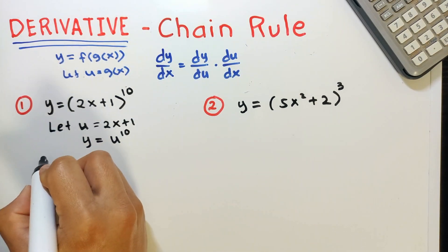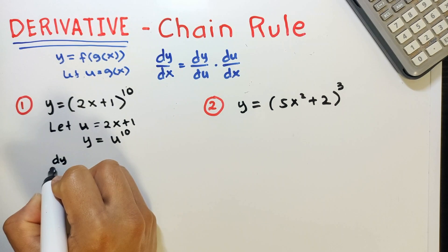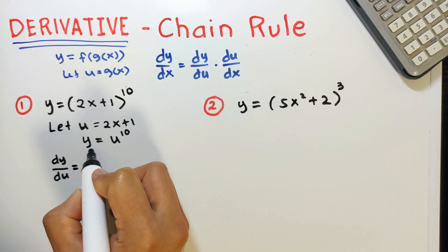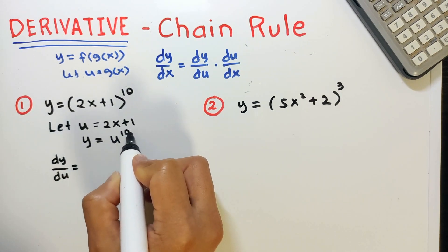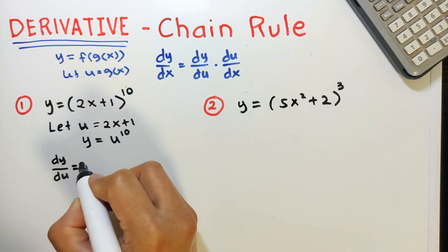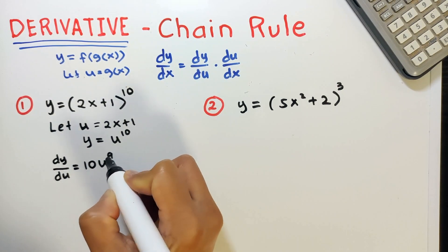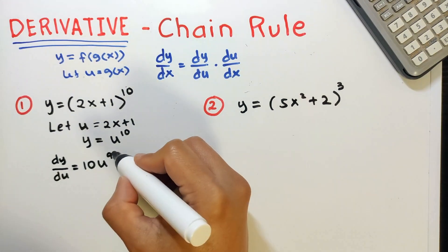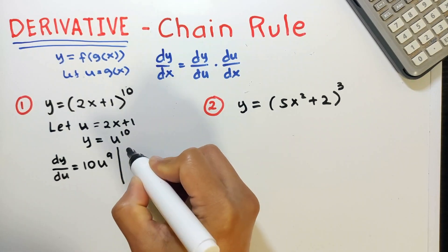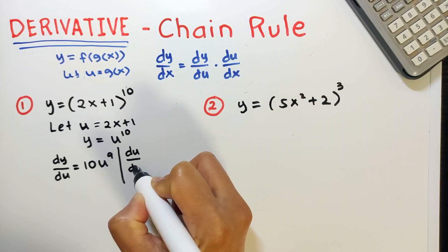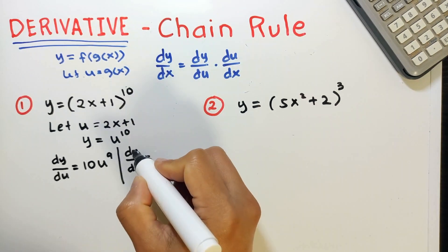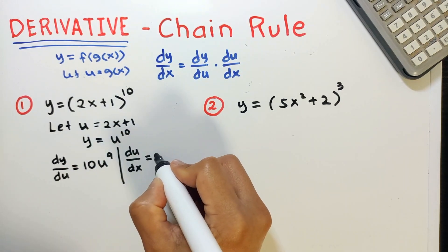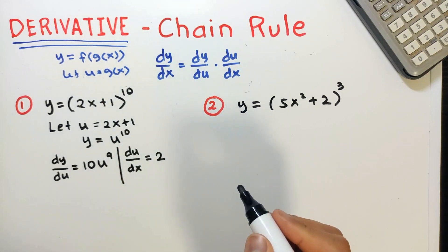Next is to find dy over du. We need to differentiate the function y with respect to u. Using the power rule, the derivative of u raised to 10 is 10u raised to 9 — bring down 10 as a coefficient, copy the base, and subtract 1 from the exponent. Then find du over dx. The derivative of 2x is 2 and the derivative of 1 is 0.